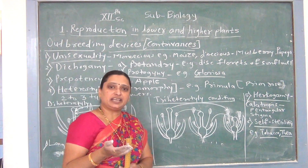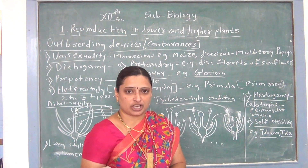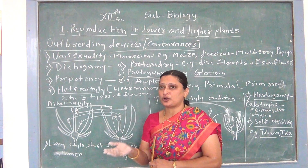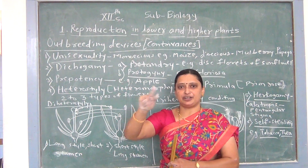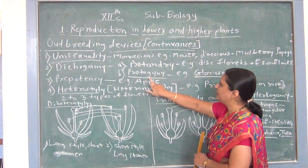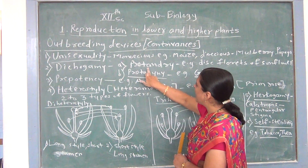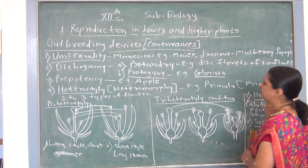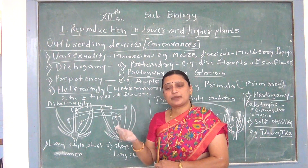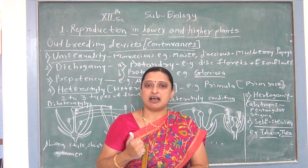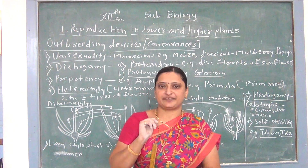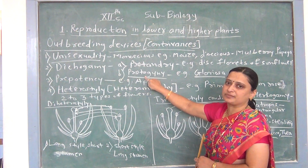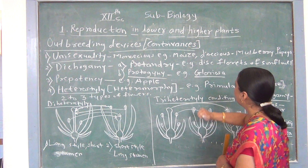The second device is dichogamy. In dichogamy, the androecium and gynoecium — or stigma and anther — do not mature at the same time. Therefore, it increases cross-pollination and prevents self-pollination. Dichogamy is divided into two types. The first is protandry, where the androecium matures earlier than the gynoecium. The second is protogyny, where the gynoecium matures earlier than the androecium. Both increase cross-pollination. An example is Gloriosa.